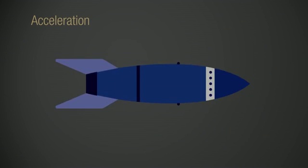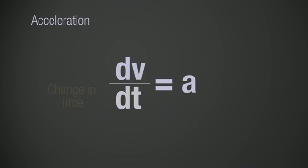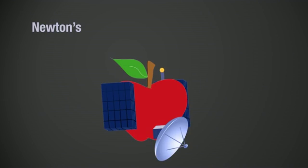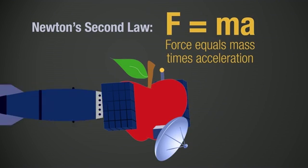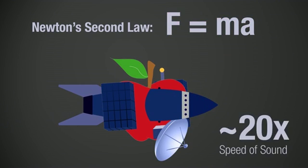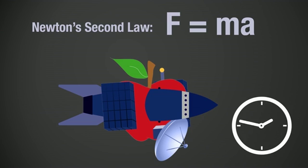How do we get an apple to go that fast? Acceleration, which is a change in speed divided by how long we take to make that change. Newton's second law tells us we can accelerate our apple by applying a force to it. Since we need to go really fast, we need a lot of force or a lot of time.